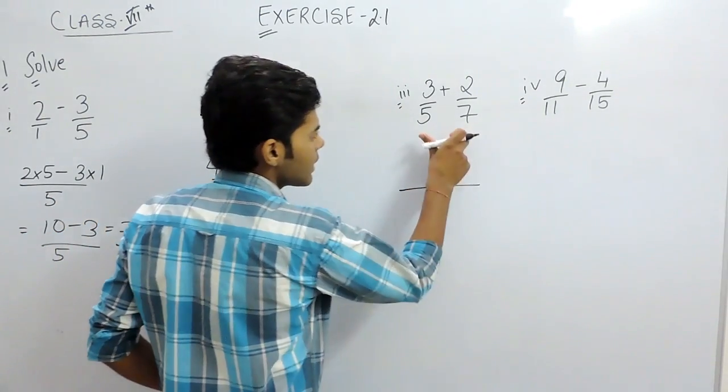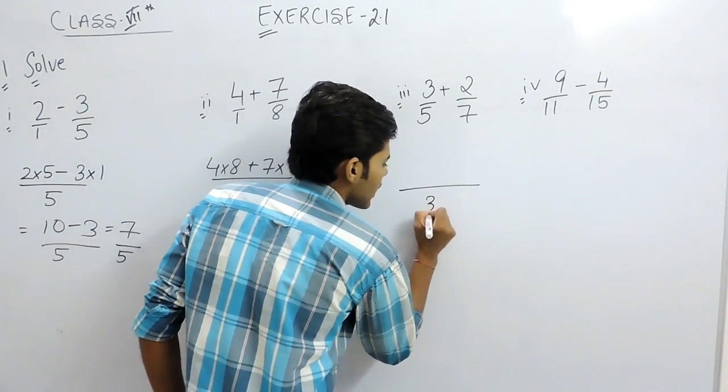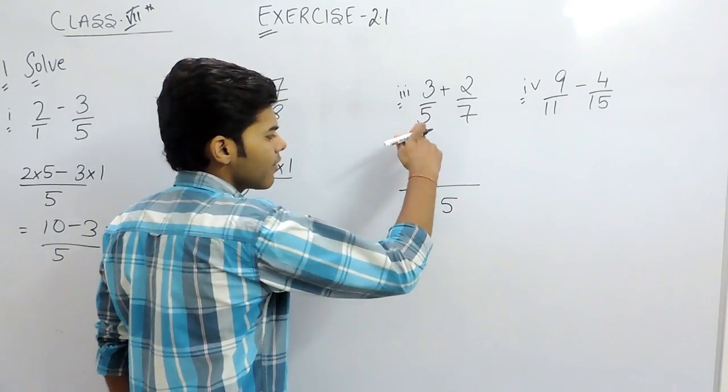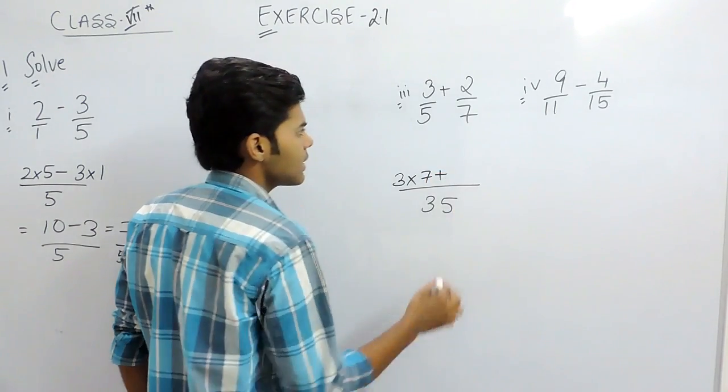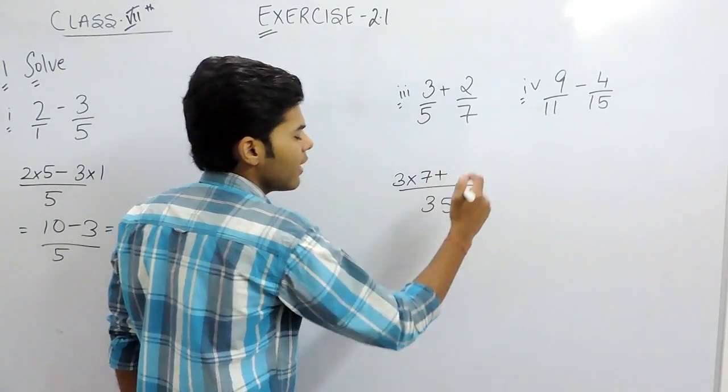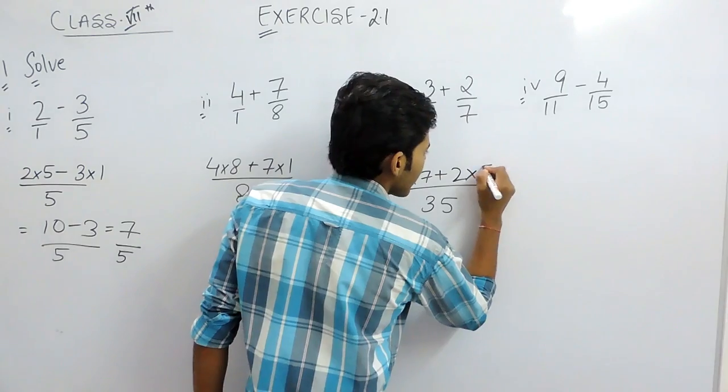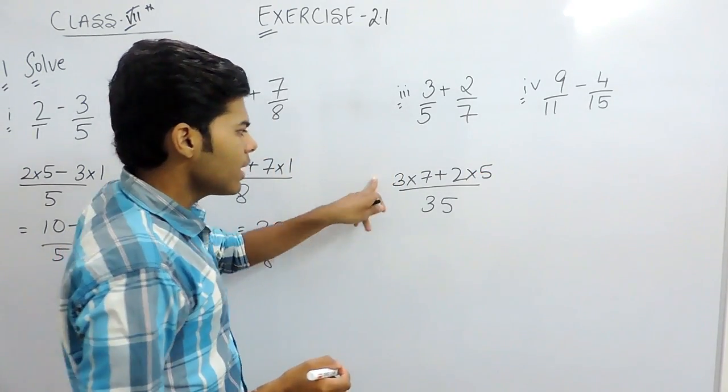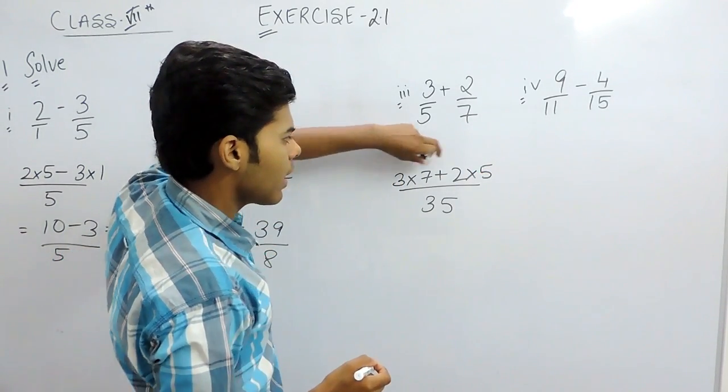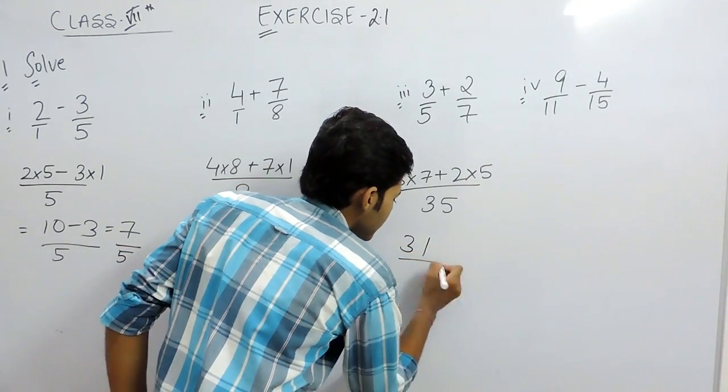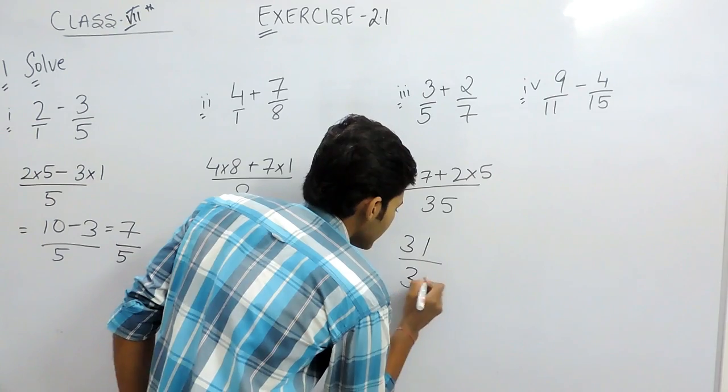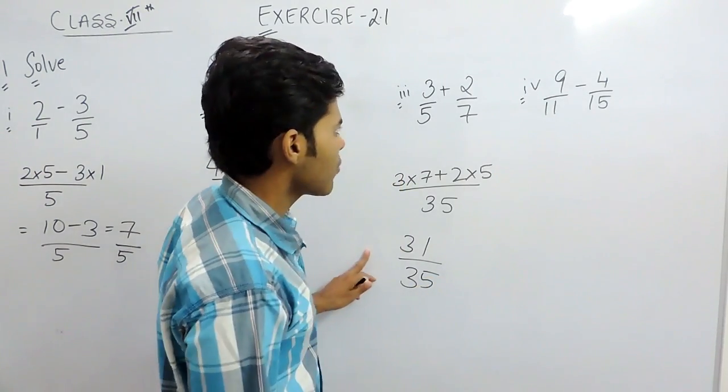Now for part C the LCM will be 35. 5 times 7 is 35. So 3 will be multiplied with 7. Plus sign as it is. 7 times 5 is 35. So 2 will be multiplied with 5. So 21 plus 10 is 31 divided by 35. This is the answer of part C.